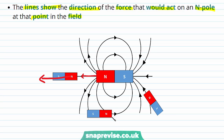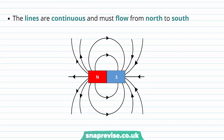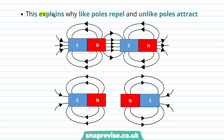Here we have a north pole acted on with a force following the field lines, and here the force acts towards the south pole. The magnetic field lines are continuous and must flow from north to south. All of these field lines originate at the north pole and curve around towards the south pole. This explains why like poles repel and unlike poles attract. The field lines point from north to south, so the north pole moves towards the south pole and they're attracted. However, where there are no field lines, the north poles are pushed away from each other, so they repel.